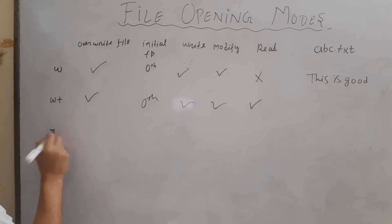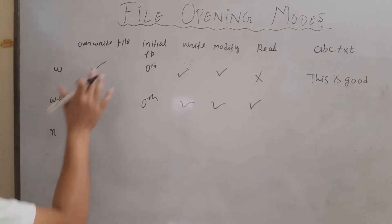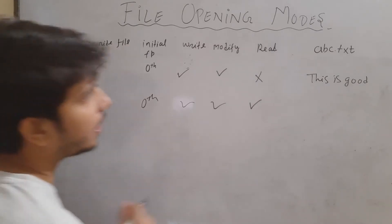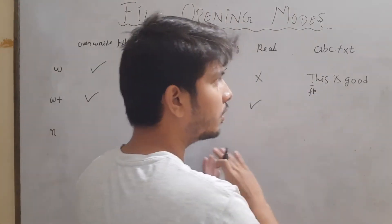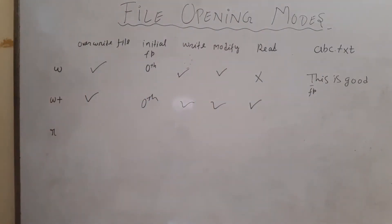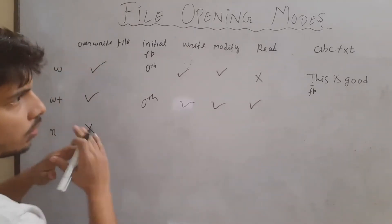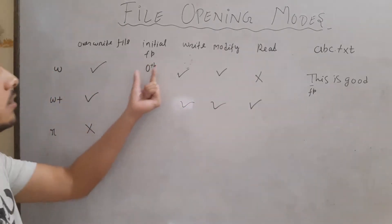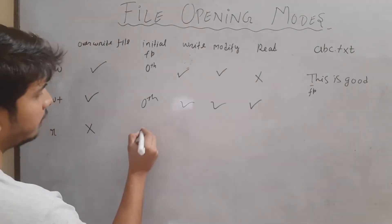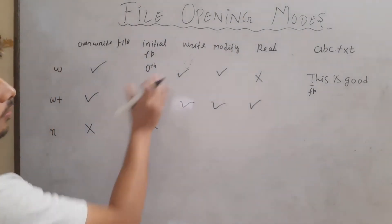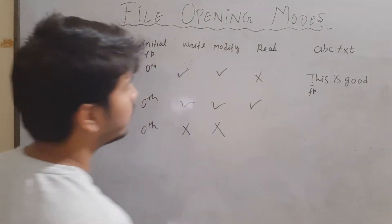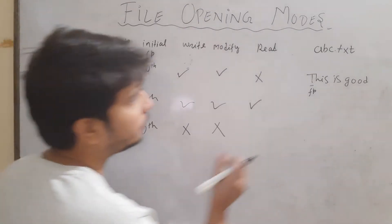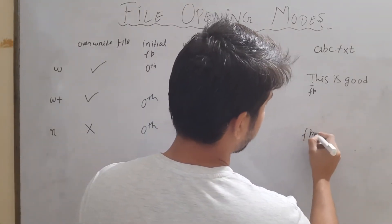After 'w' and 'w+' mode, we have 'r' mode — reading mode. In reading mode, overwrite of the file will not take place, so the previously contained content will not be erased. The file pointer will be at the start of the file — the zeroth location. Write operation is not allowed, and modify is also not allowed.